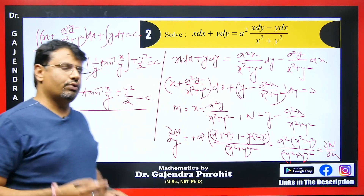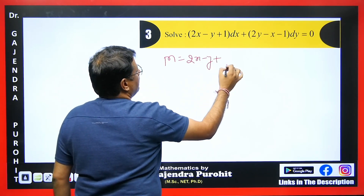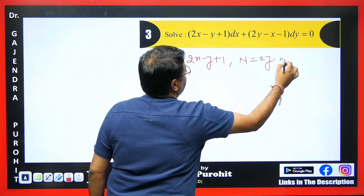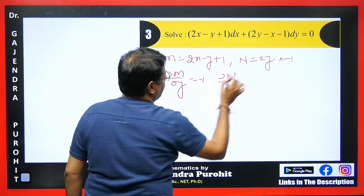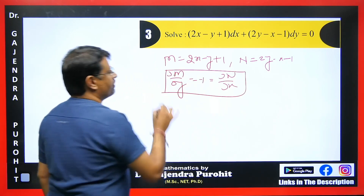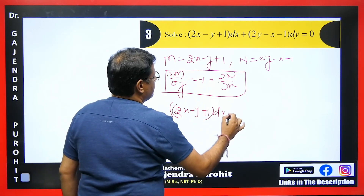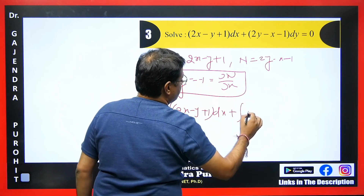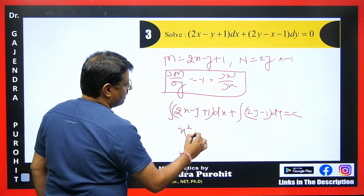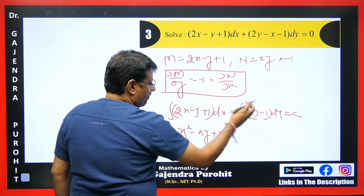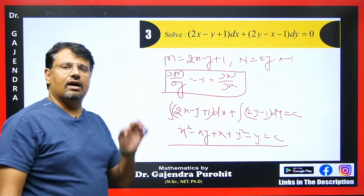Next question: M = 2x − y + 1 and N = 2y − x − 1. Del M by del y = −1 and del N by del x = −1; both are equal so it is exact. Integrating directly: x² − xy + x + y² − y = c.